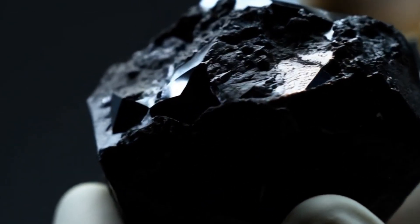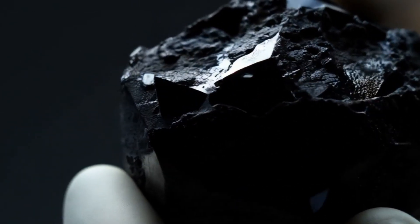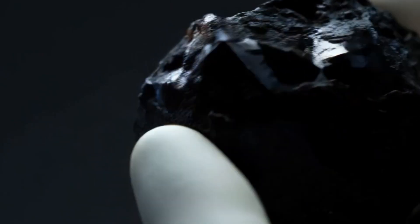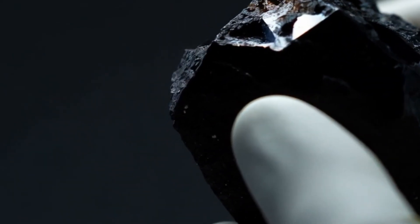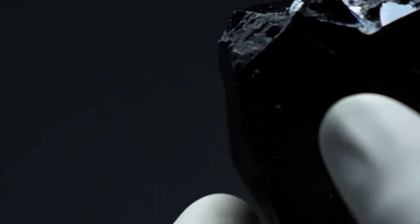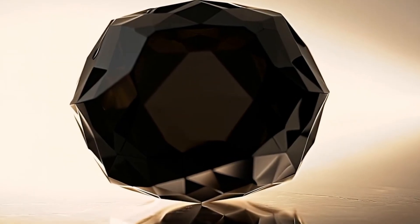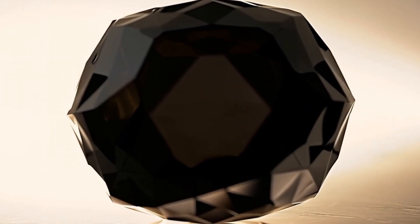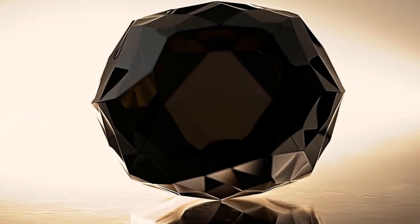Black diamond, also known as carbonado, is one of the rarest and most mysterious forms of natural diamond. Unlike transparent diamonds, carbonado has a dark black or charcoal appearance and a porous structure. Because of its unique properties, many people confuse it with fake stones or other black minerals.